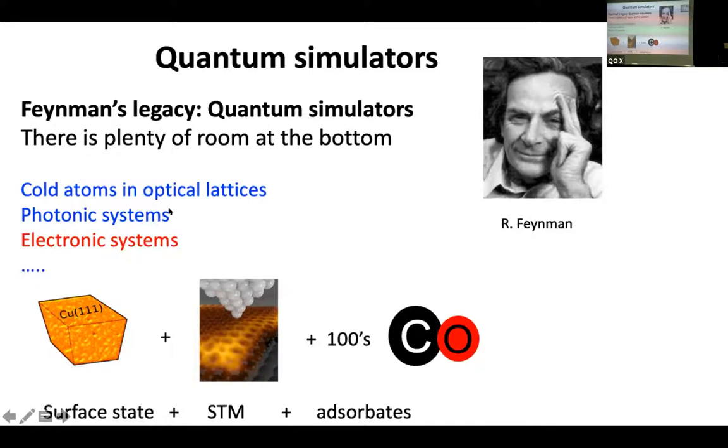And the platform that we are going to use are surface states of metals, like copper 111, plus the STM, plus adsorbates like carbon monoxide, hundreds of them, that we are going to manipulate on top of the surface using the STM. In the second part of my talk, I will tell you about photonic systems. And in the third part, I will give you a glimpse of a last work we did, which is just theoretical.